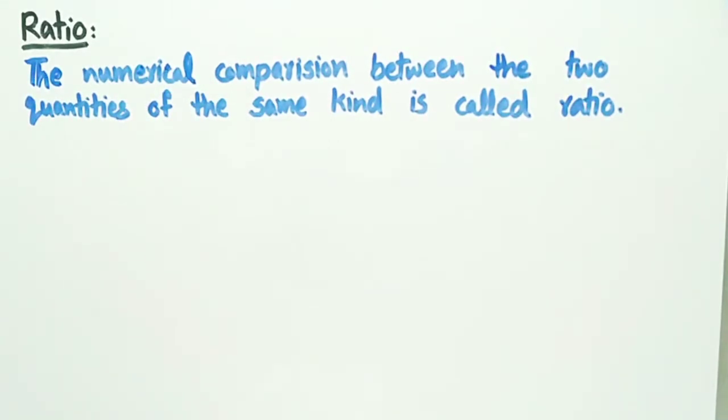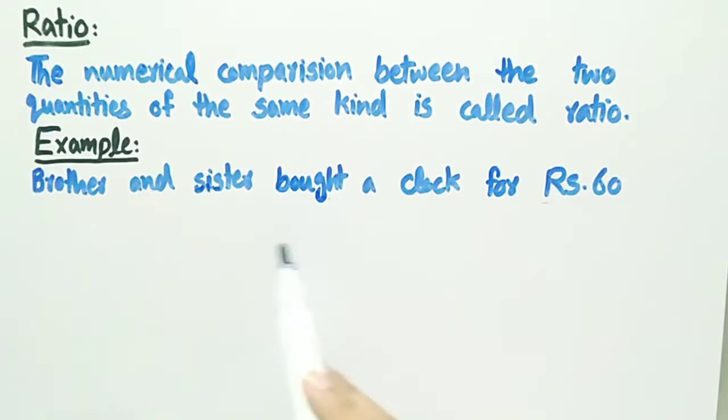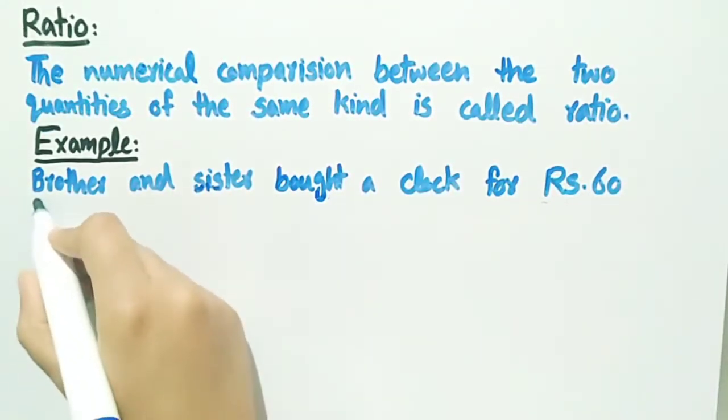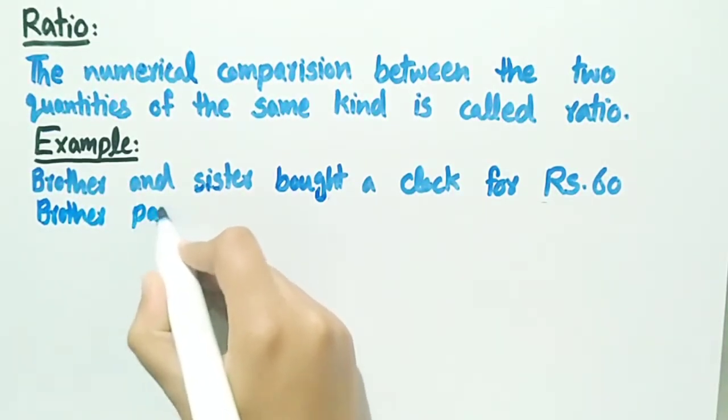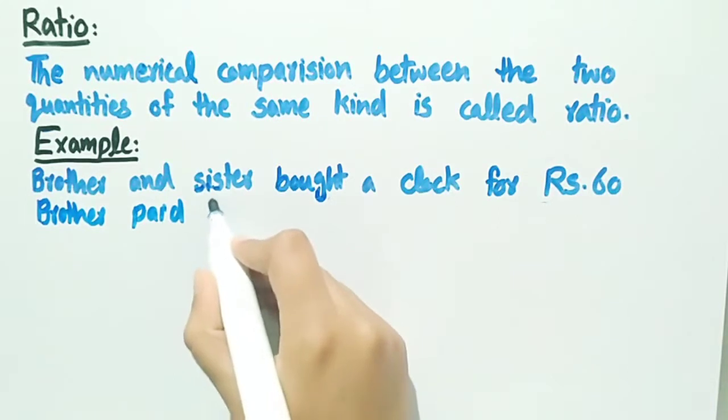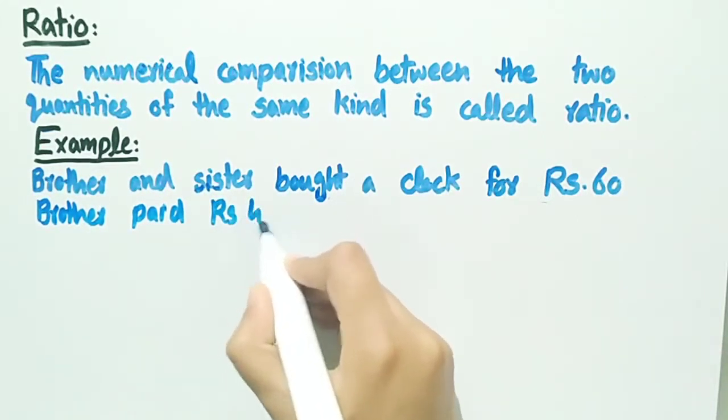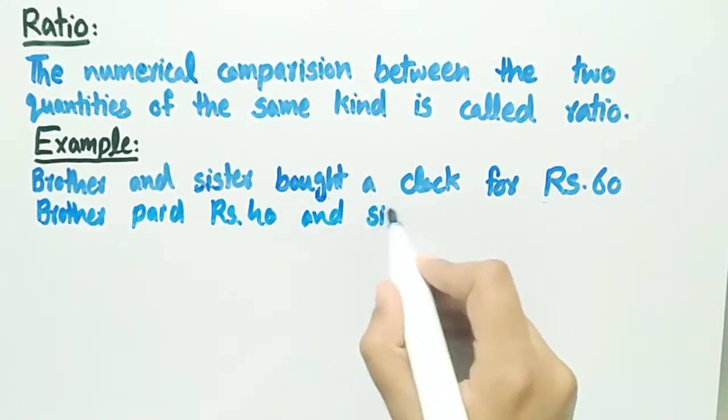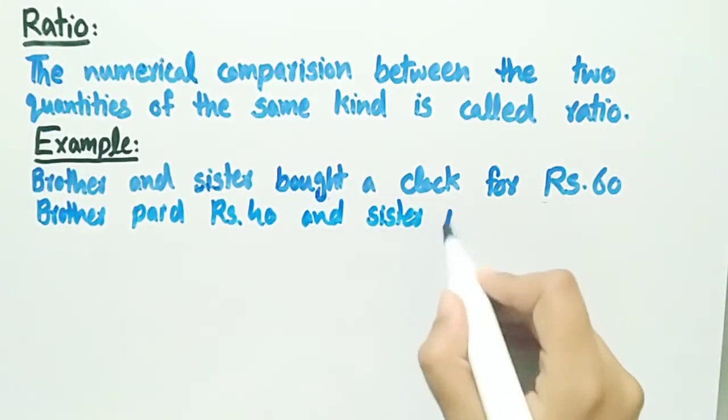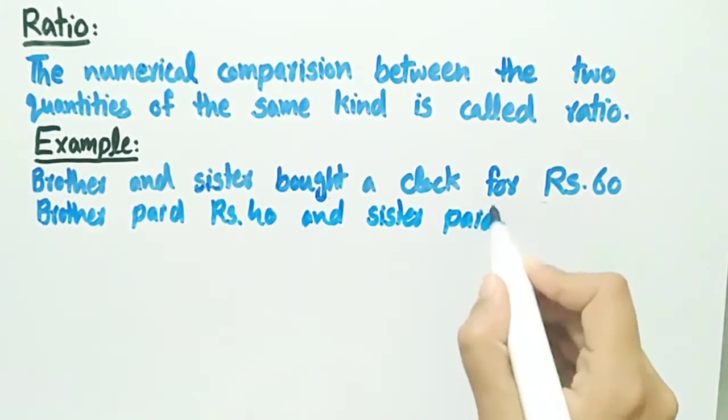We will make it clear with an example. Brother and sister bought a clock for Rs. 60. Brother paid Rs. 40 and sister paid Rs. 20.